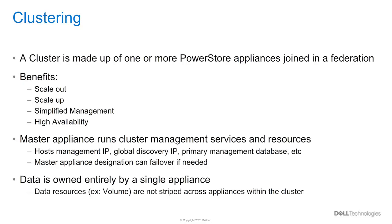A PowerStore cluster contains a single master appliance, which runs cluster management services and resources. This includes hosting the single cluster management IP, the global storage discovery IP, and the primary management database the other appliances will reference. If the master appliance were to experience an issue, the master services can failover to a surviving appliance in the cluster. One thing to note is that each appliance has their own set of resources and data. Data is not striped across multiple appliances.